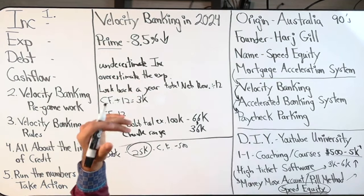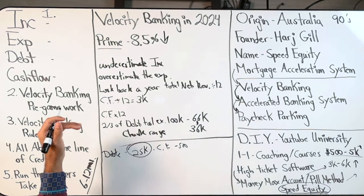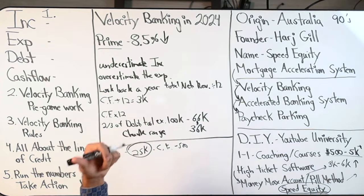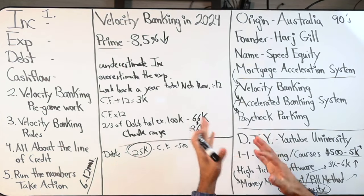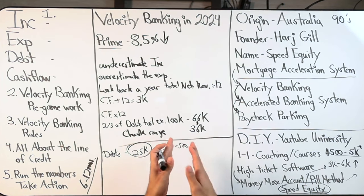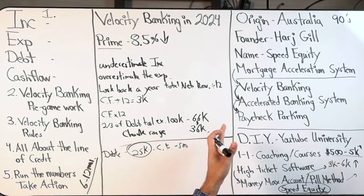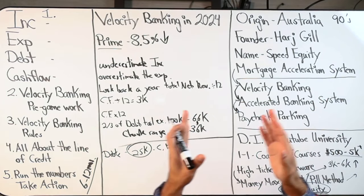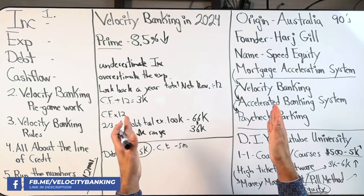We underestimate your income, overestimate your expenses, look at cash flow times 12 in a year net from last year's revenue. That gives us an idea of what you'll likely produce this year. And in fact, you should make more every year, because inflation goes up and taxes go up. If our income stays stagnant, that would not be good.